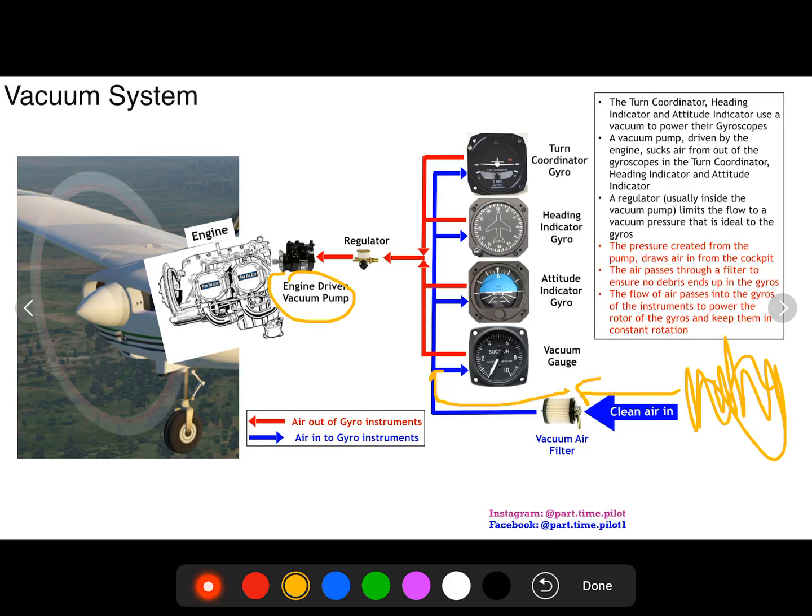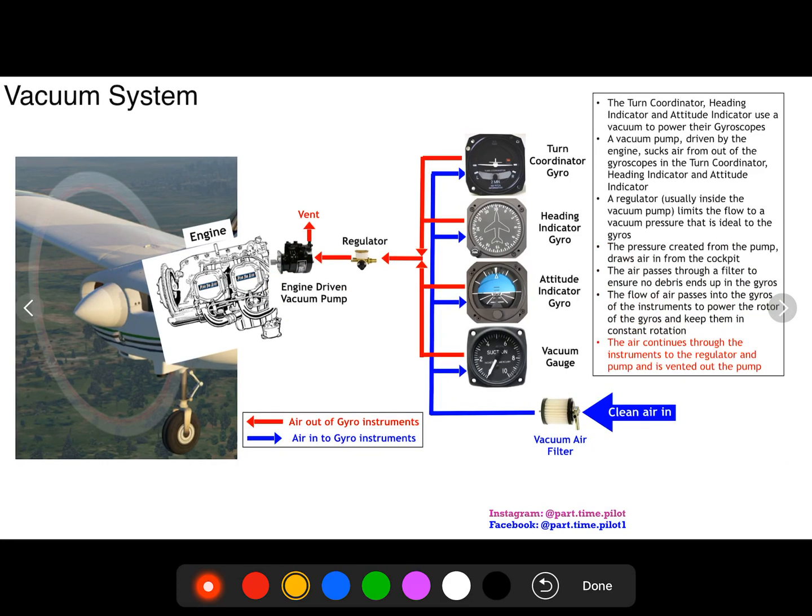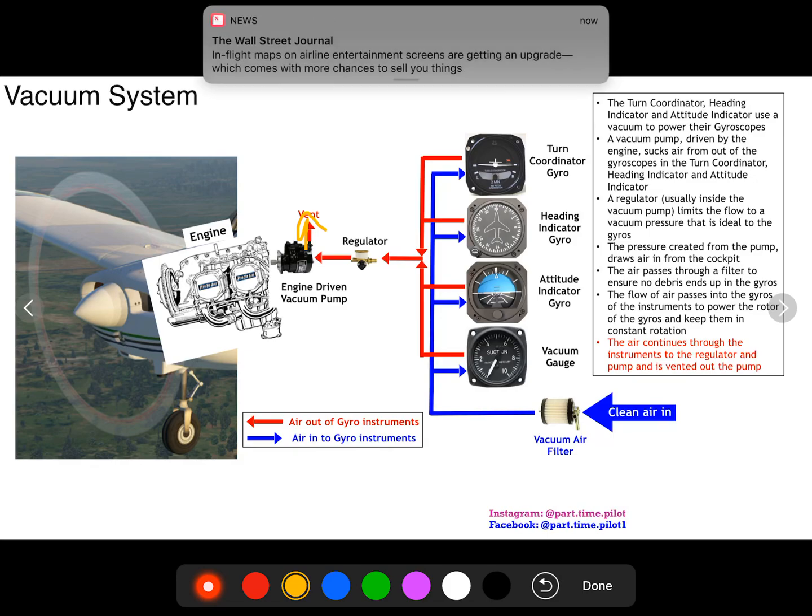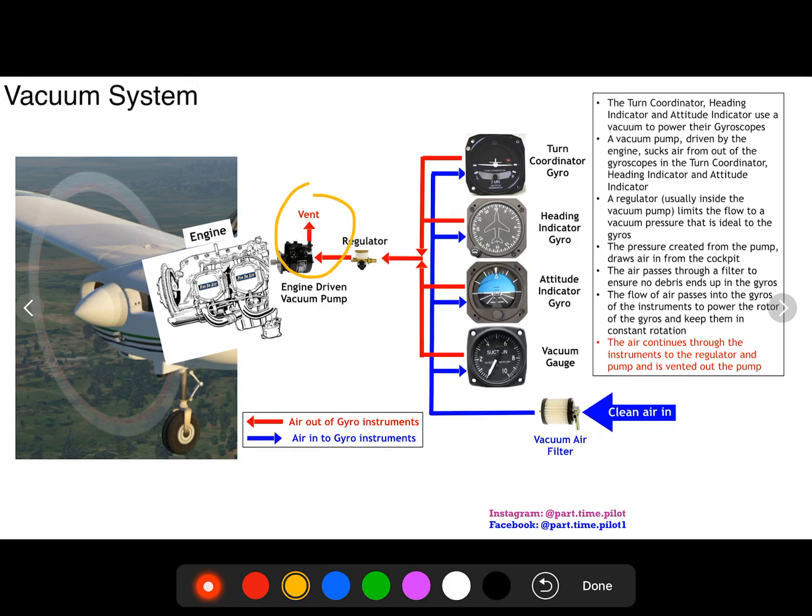And all this air is gonna follow the blue line. It's gonna go into these indicators and it's going to go back out. So it's gonna flow right through the gyros, powering the gyros, and then out through these red lines, into the regulator, and then into the pump. Eventually it's going to vent out of the pump. Here. Sorry about that.